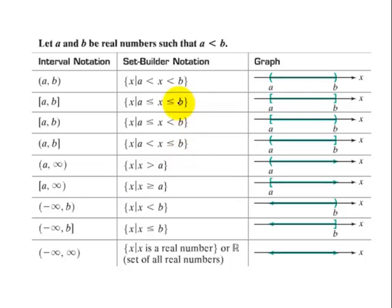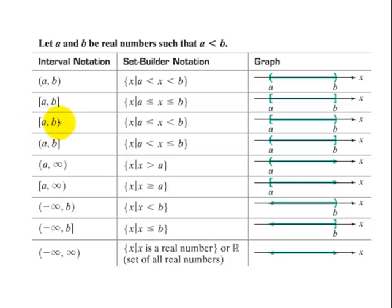Here's a summary. Where A is less than B: the interval notation (A, B) with parentheses means all values in between A and B but not including A or B, expressed as A < X < B. Using brackets [A, B] means it can equal A and it can equal B, shown as solid circles on the graph. This can be mixed — bracket A, parenthesis B means it can equal A but not B, and parenthesis A, bracket B means it can't equal A but it can equal B.